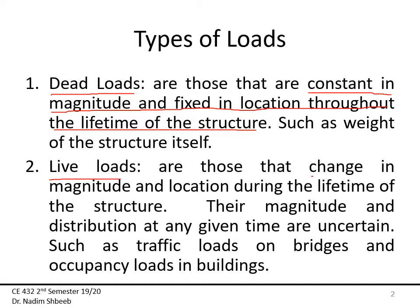An example of dead load would be the own weight of a beam, column, or slab. The second type is live loads — those loads change in both magnitude and location during the lifetime of the structure. You might have a constant location but a variable load, or a constant load but changing location, such as a train on a bridge or pedestrians on a bridge.